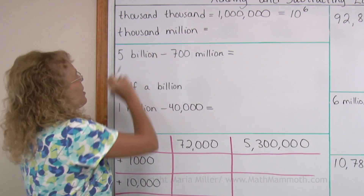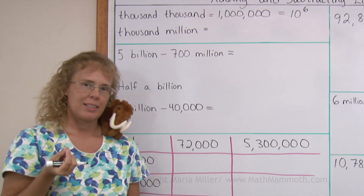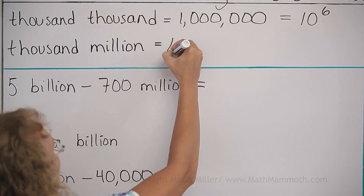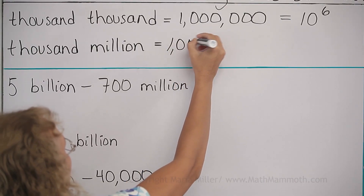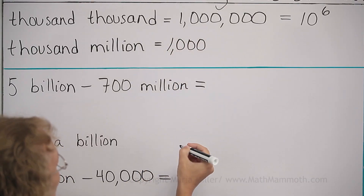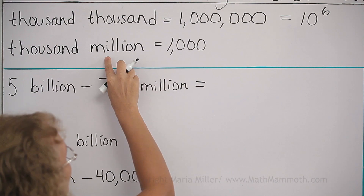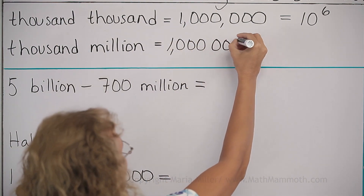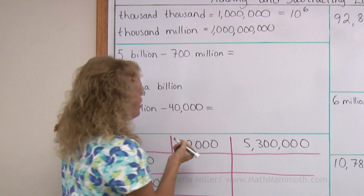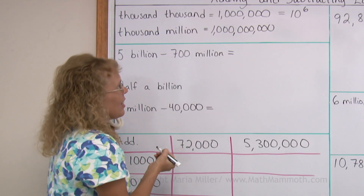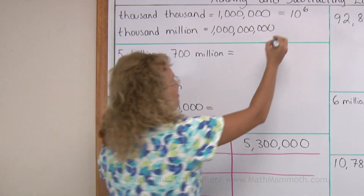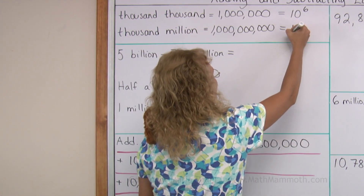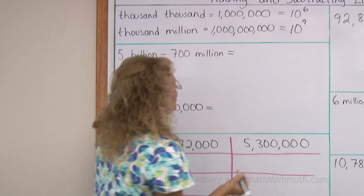How about a thousand million? What number is that? It would be a thousand followed by six zeros for the million — like that. And that is one billion, or as a power of ten, ten to the ninth power.